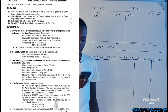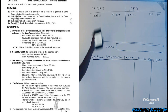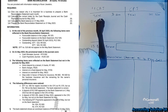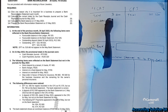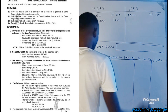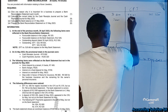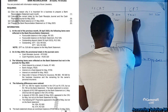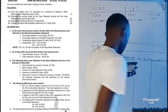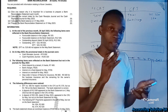A direct deposit is a cash receipts journal entry, so we record the direct deposit of R7,400 in the cash receipts journal. Then bank charges of R520 — bank charges are a cash payment journal entry because we are paying a charge, so we record R520 in the cash payment journal.